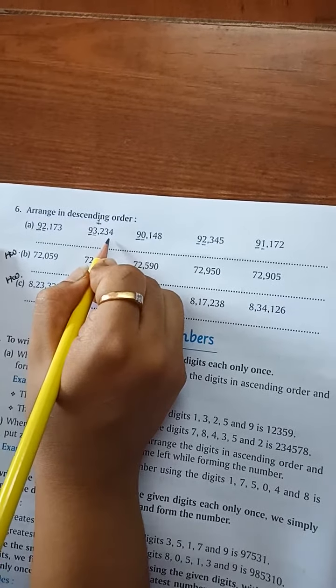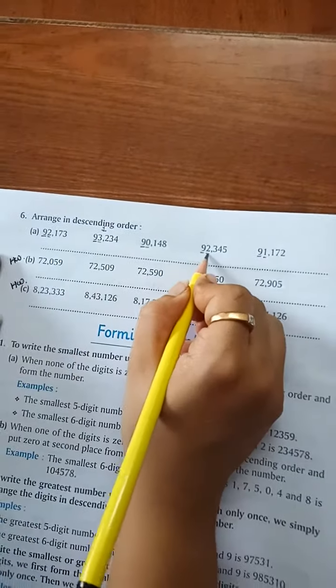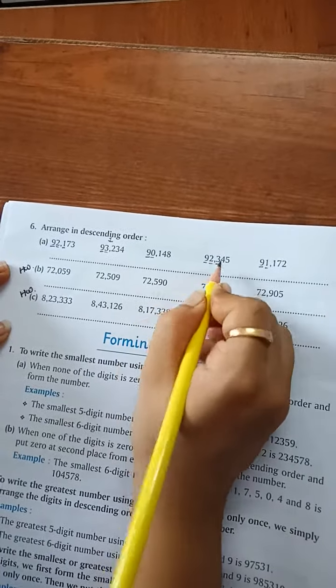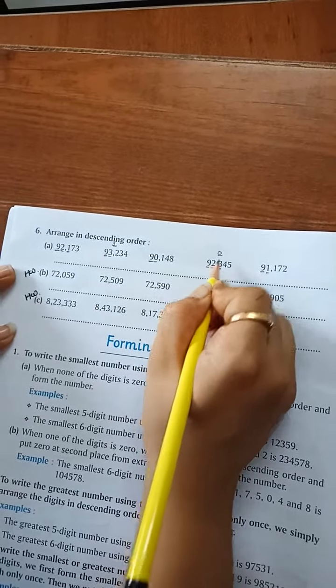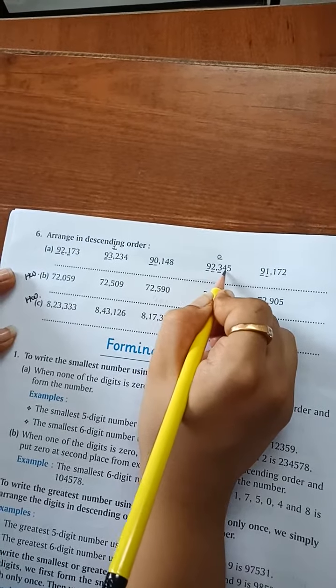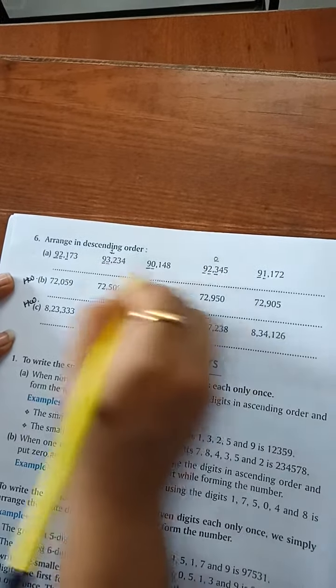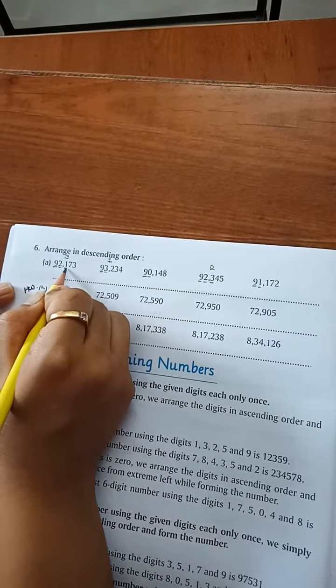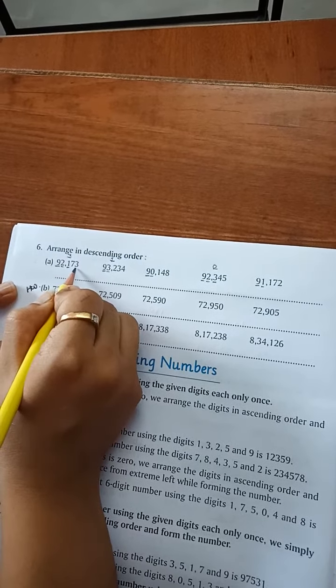Now here 2, 2. Both are equal. Check next. 1, 3. Which is bigger? 3. At second place, 92,345. And at third place, 92,173.